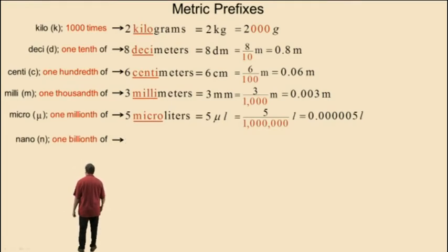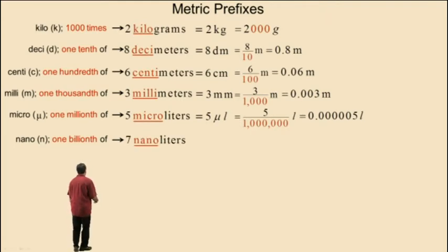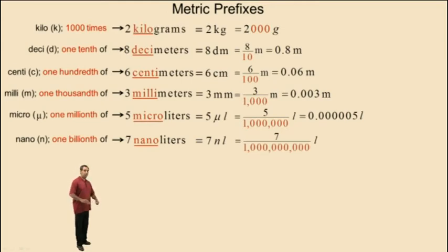Nano, abbreviated with the letter n, means one billionth of. 7 nanoliters, which is written 7 nl, is equivalent to the fraction 7 over 1 billion. So, we say it's 7 one billionth of a liter. As a decimal, it's written as 0.0000000007, I think.